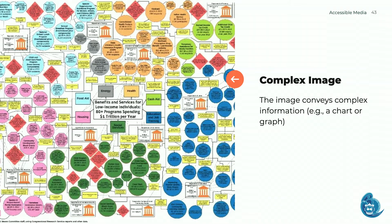Complex images — graphs, charts, diagrams — contain too much information to be effectively described in alt text alone. For these, we describe them with a long description or within the context of our surrounding text, using the image to support the text around it. Ask: given the current context, what information is this image intended to communicate? A long description should include structural elements — label tables, graphs, data headings, and lists.